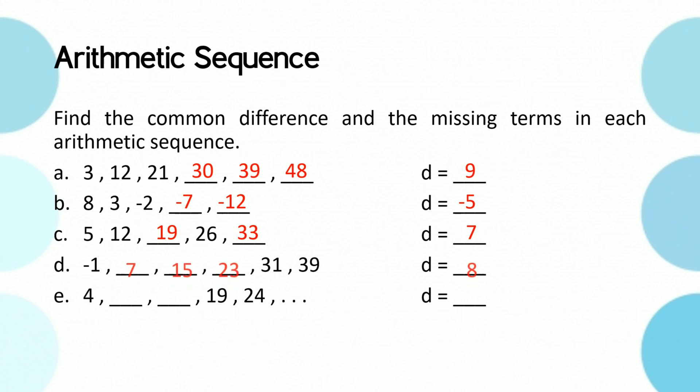For letter d, the common difference is 8 and the missing terms are 7, 15, and 23. For letter e, there is a dot dot after 24. We call that an ellipsis, meaning the sequence for letter e continues as far as it goes.